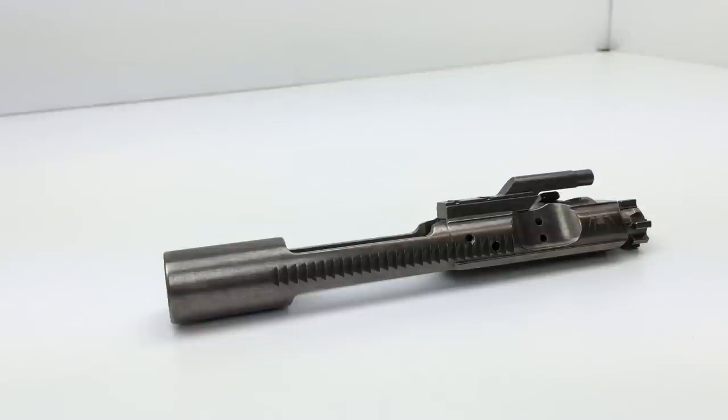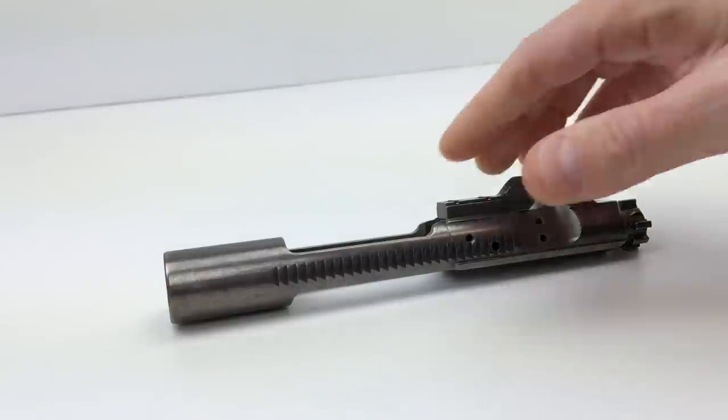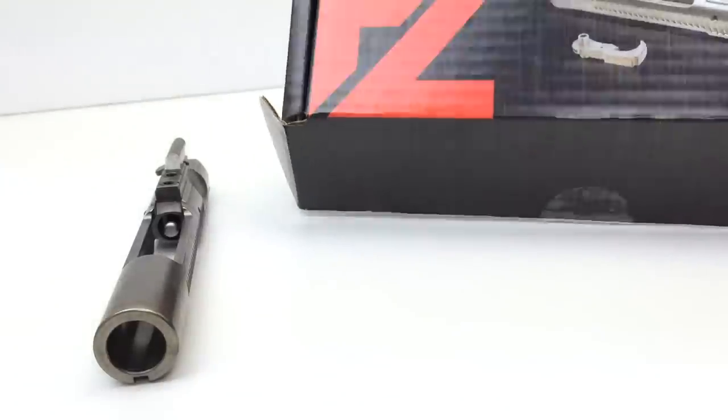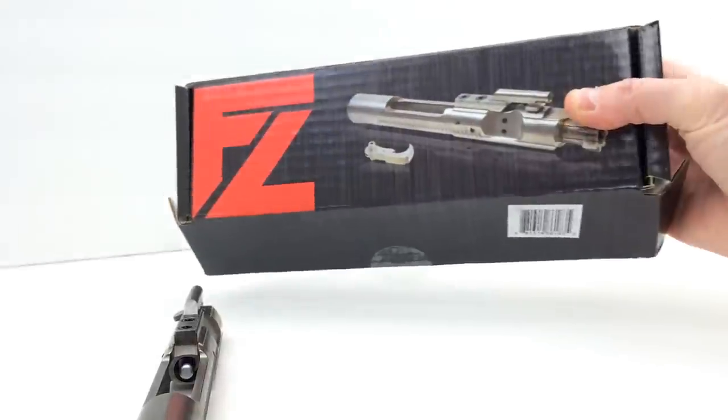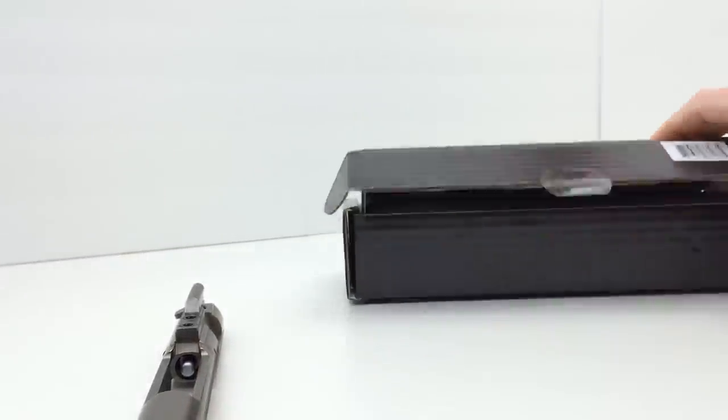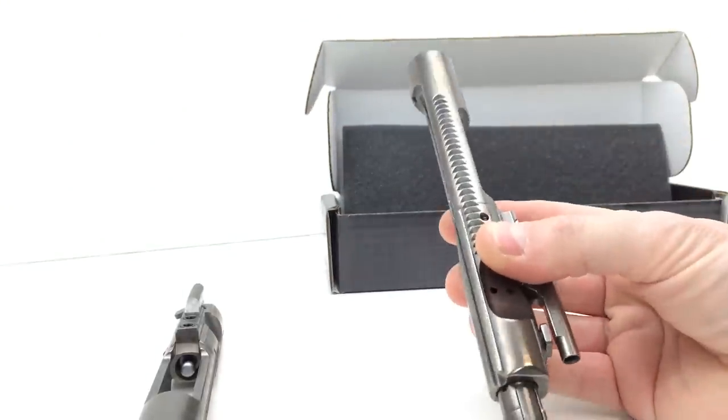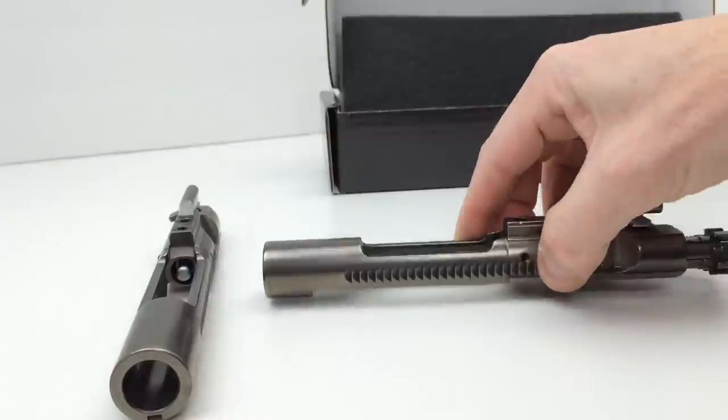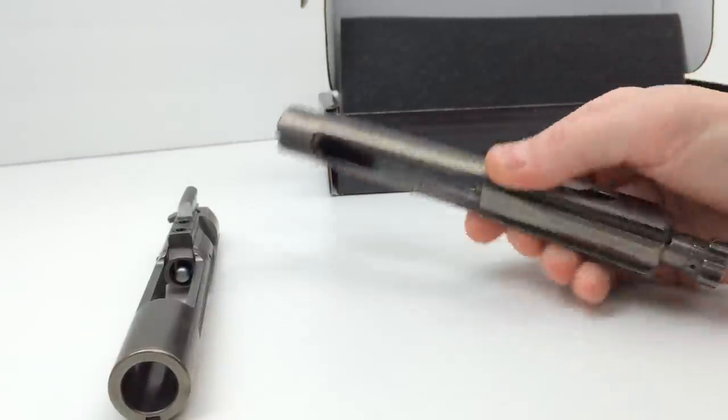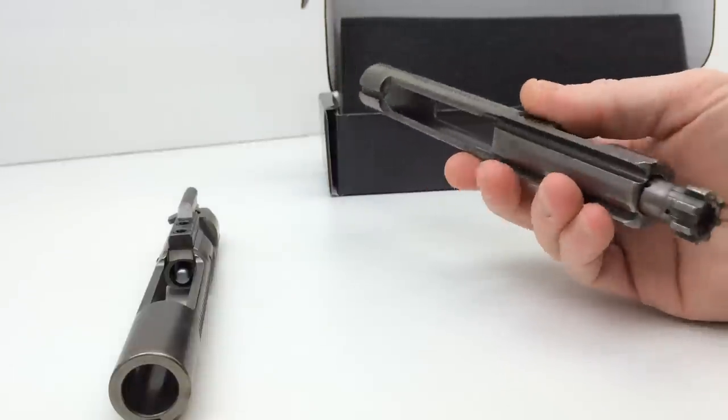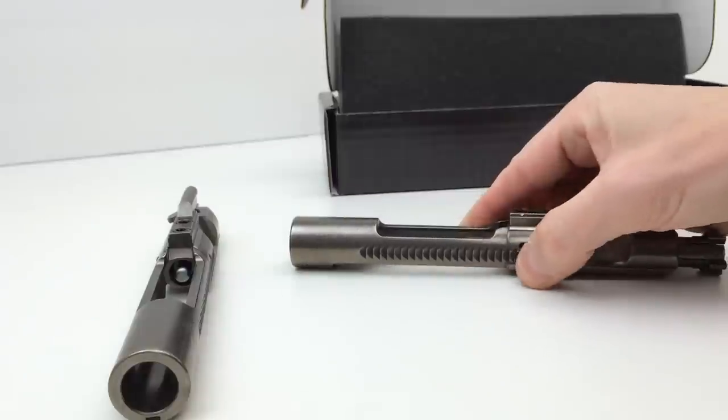Now, I'm not picking on any particular manufacturers, so I don't want to draw attention to any one particular manufacturer. This bolt carrier group is made by Spikes Tactical. This bolt carrier group, as you can see, is a Fail Zero. Now, this is a semi-auto bolt carrier group, and it is suffering from the exact same problem. This is the exo-nickel boron, and it's not polished. The finish of this looks exactly the same. It feels the same. It looks the same as the Spikes. It is basically a non-polished bolt carrier group.